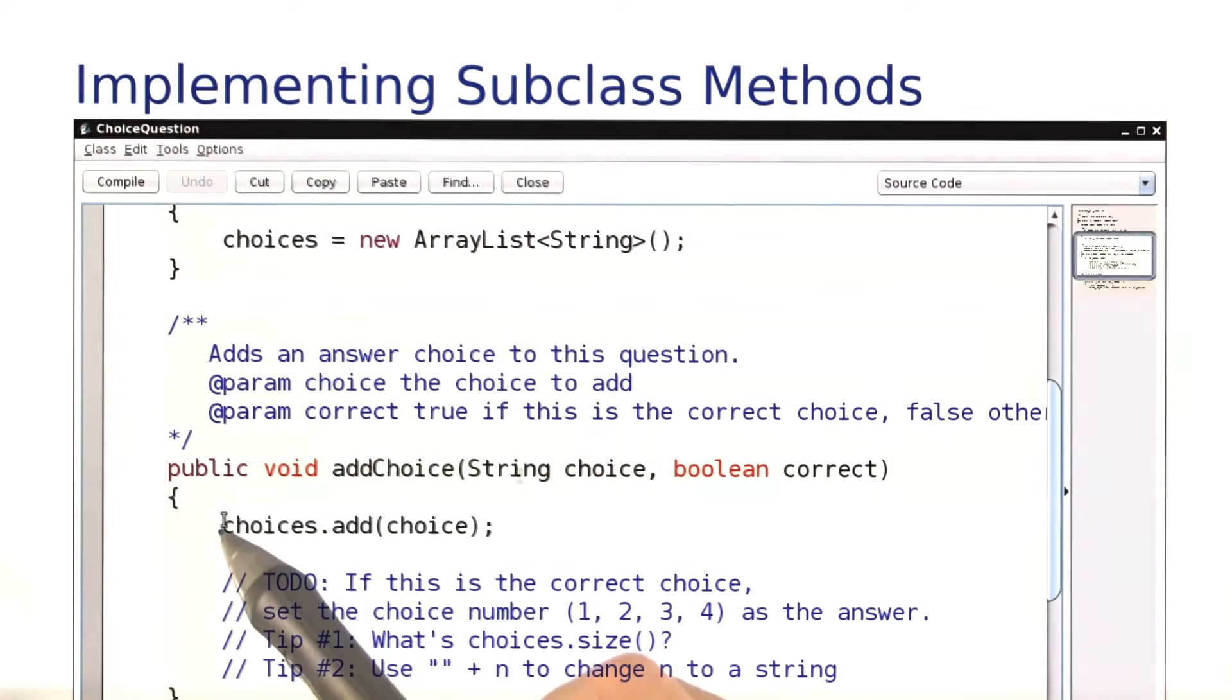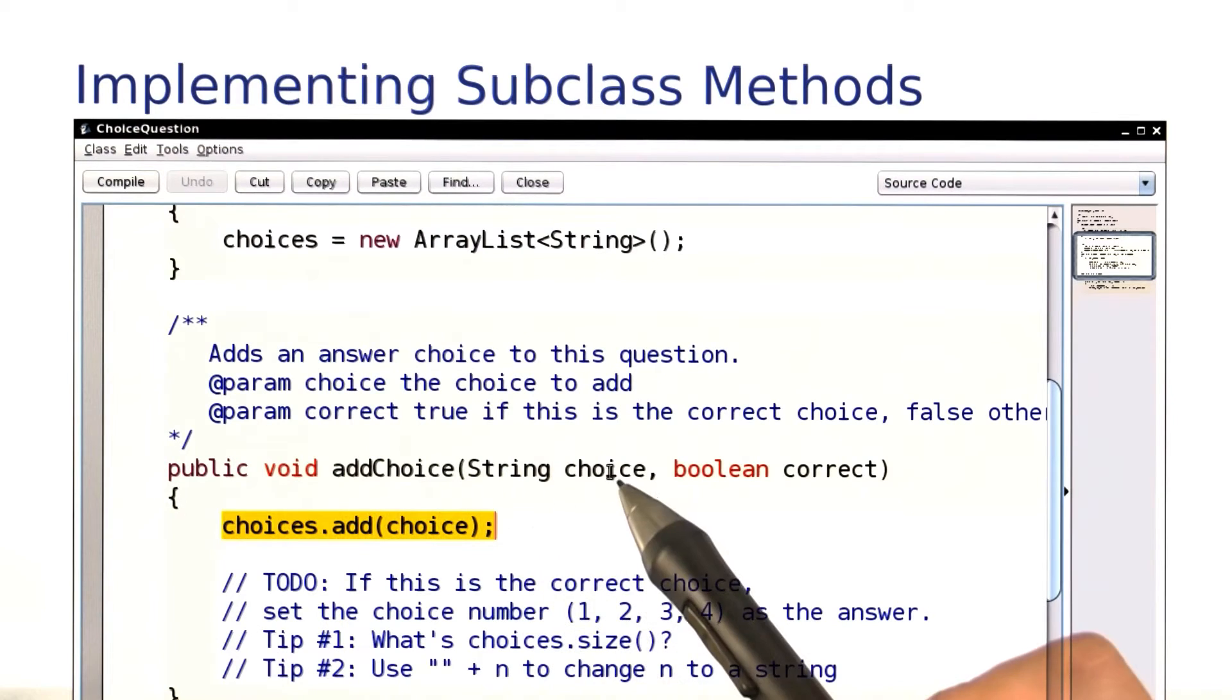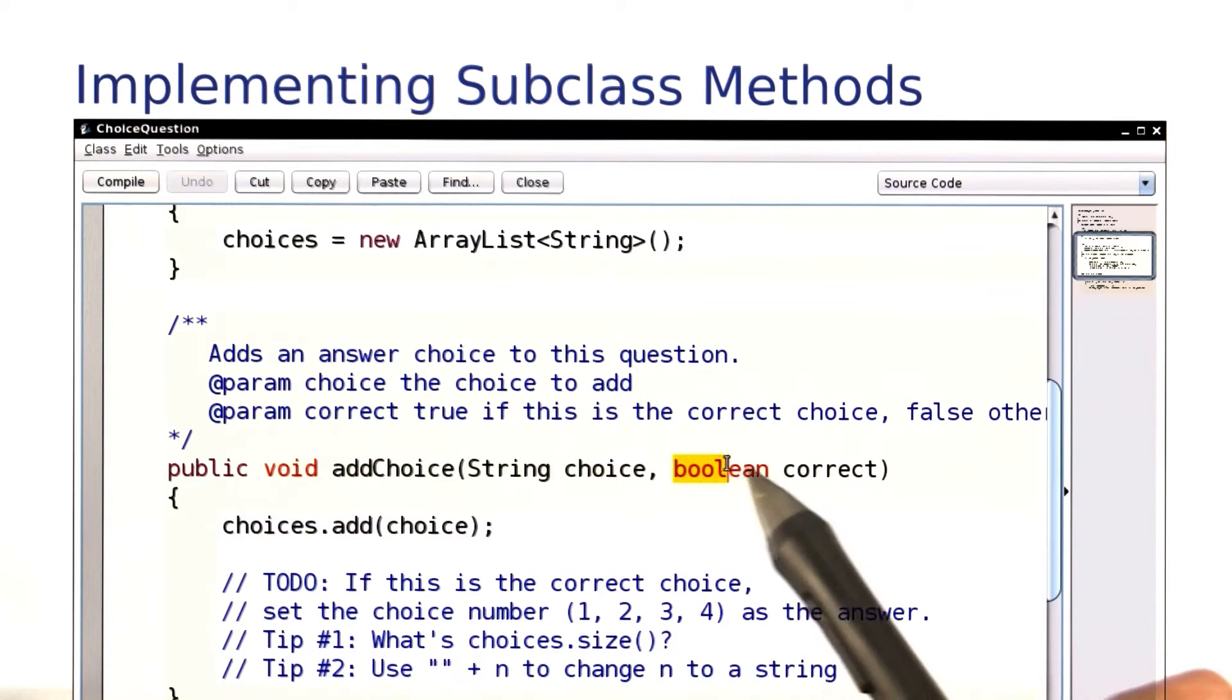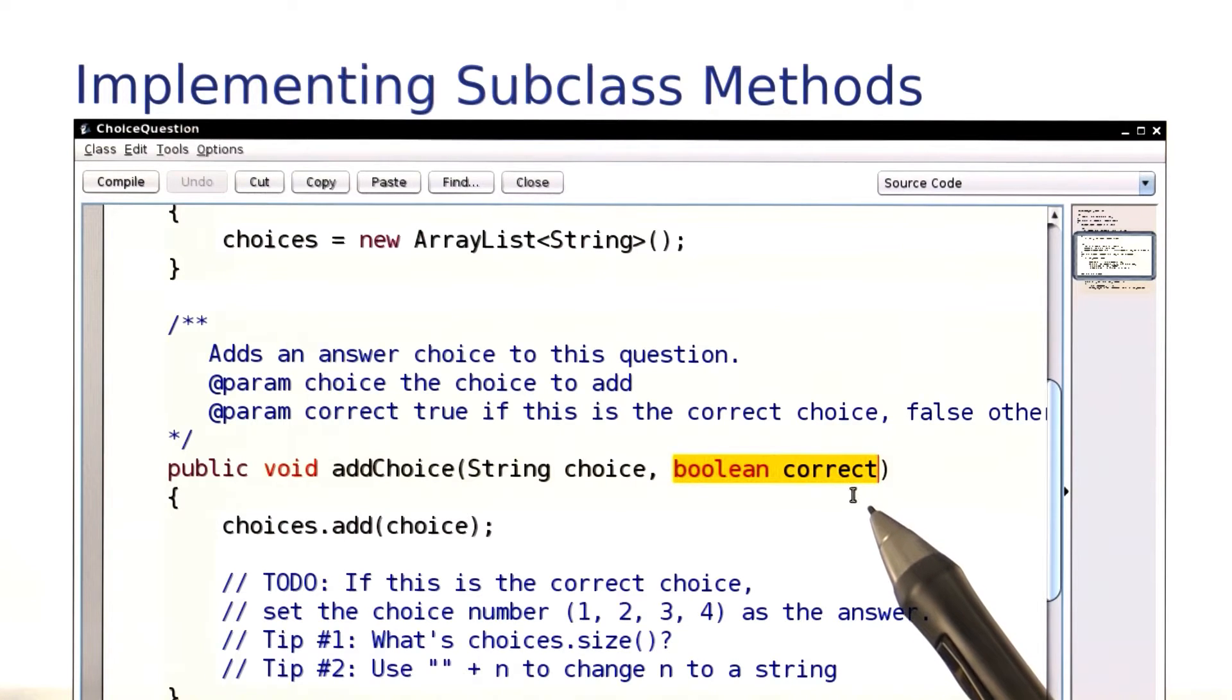Let's continue implementing the addChoice method. You've already done the first part, adding a new choice to the list of choices. Now, if this parameter here says that it was the correct choice, then we should set the answer.